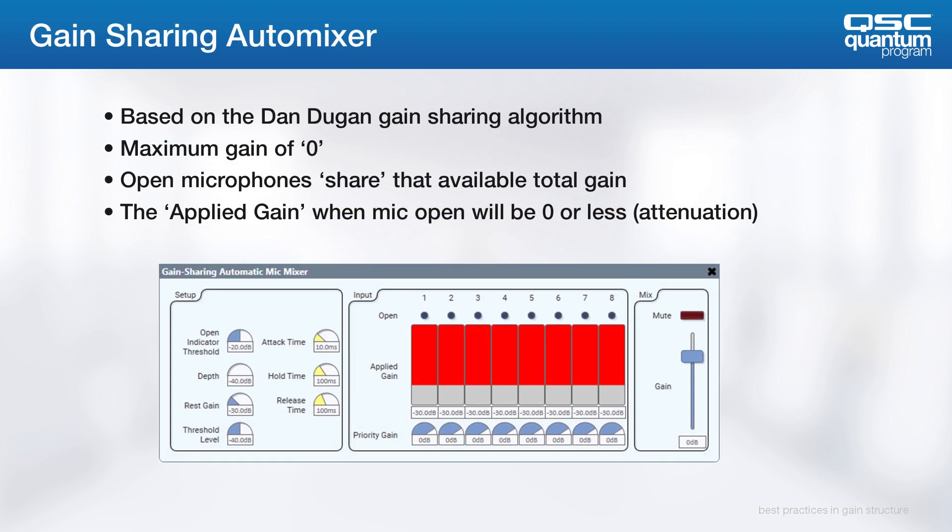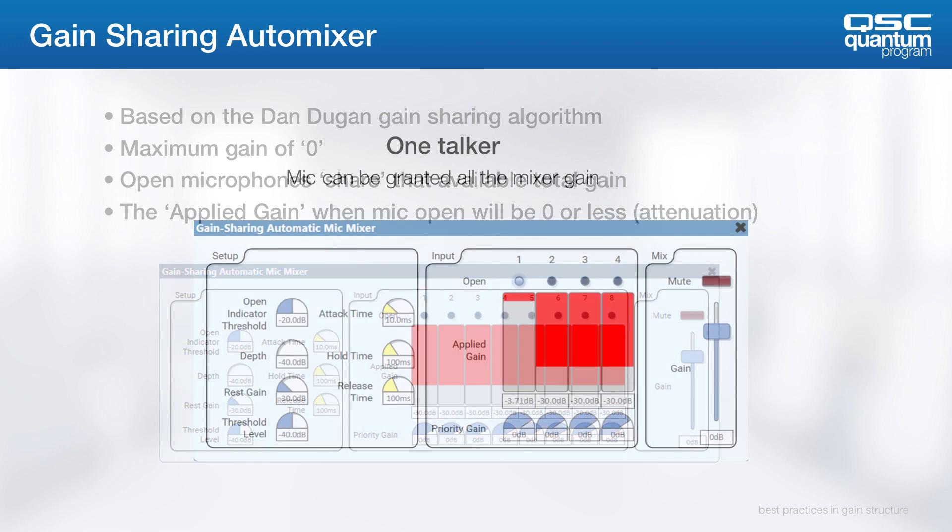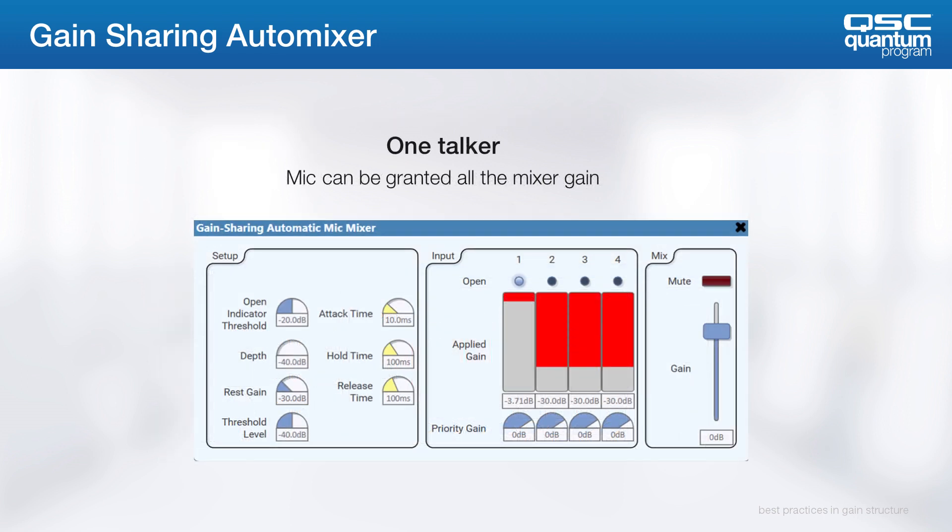Next, let's talk about the Q-SYS gain-sharing automixer, which is based on the Dan Dugan gain-sharing algorithm. Its goal is to allow a maximum gain of zero by allowing each mic to share the total available gain.